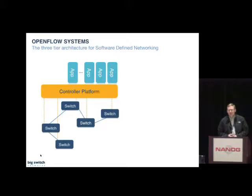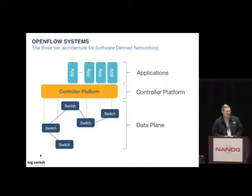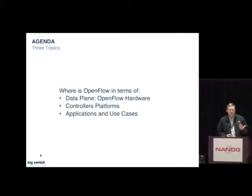The architecture has three major pieces. We have the data plane — switches, either software or hardware, enabled with the OpenFlow protocol. We have a controller platform that talks to the switches and exposes an API to the applications running on top of it. And then we have applications that actually provide the new interesting services in the network. For this talk, I'll cover our perspective on the data plane, controller platforms, and applications.